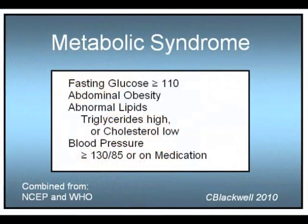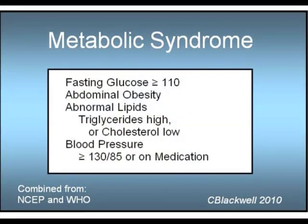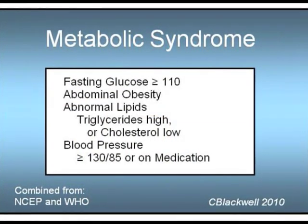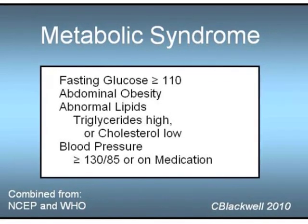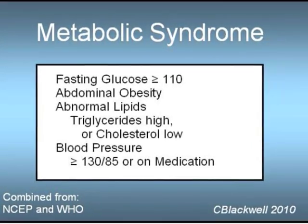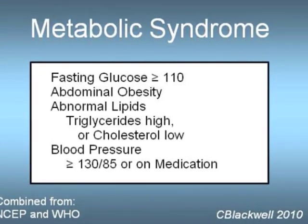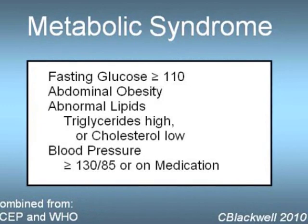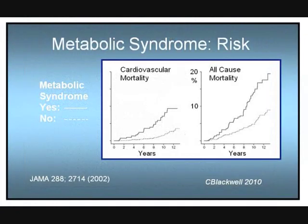We cannot leave this subject without mentioning metabolic syndrome. In the U.S., it affects 25% of people in middle age and 35% of the older population. It starts with weight gain, particularly in the abdominal area. It is associated with elevated blood lipids, high blood pressure, and insulin resistance. This group of findings is recognized as a strong predisposition to developing diabetes and cardiovascular disease.